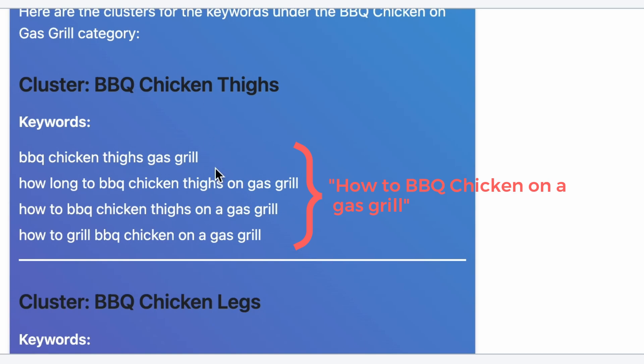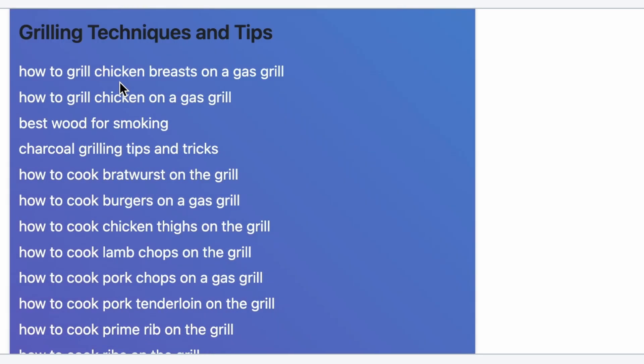Of course, don't stop here. Do keyword clustering for the remaining categories as well. Don't be surprised if the AI makes mistakes. No AI is perfect, at least for now, but they're getting pretty close. If they make mistakes, correct them. And remember, you are not just limited to RankBot. You can use other tools like ChatGPT or Claude to perform the same tasks. And if you have a bigger budget, then invest in one of the SEO tools like Ahrefs or SEMrush, and it can make it even easier for you to find topic and keyword clusters.